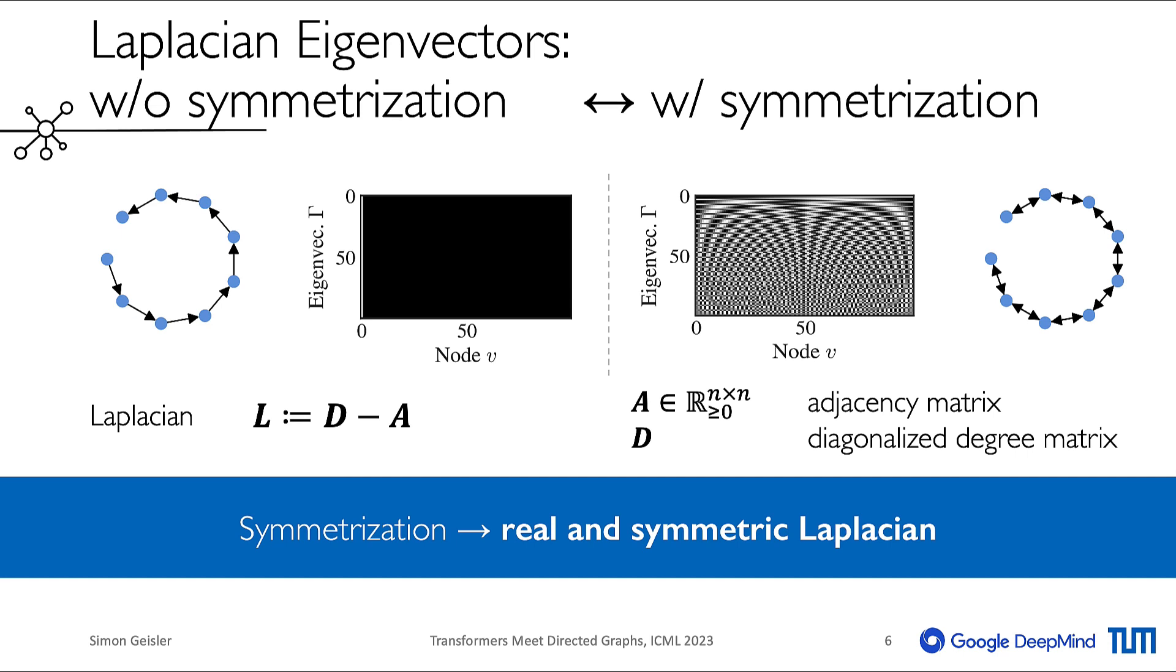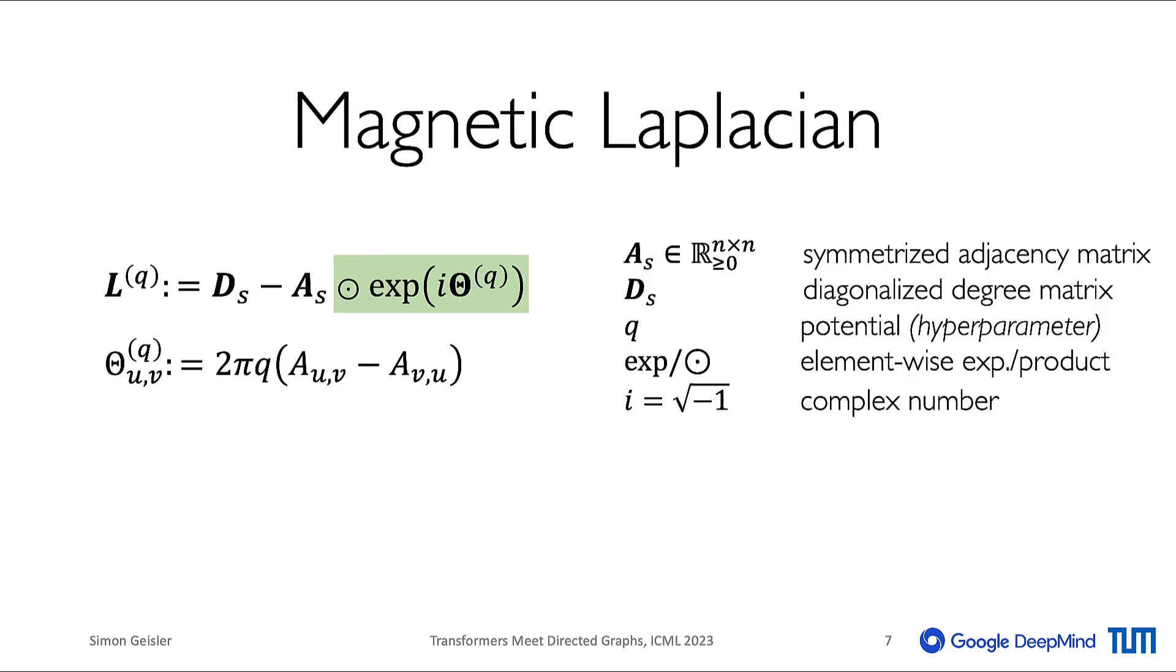However, symmetrization is required to make sure the Laplacian is real and symmetric. Omitting the symmetrization may cause undesirable properties yielding unusable position encodings as we can see to the left.